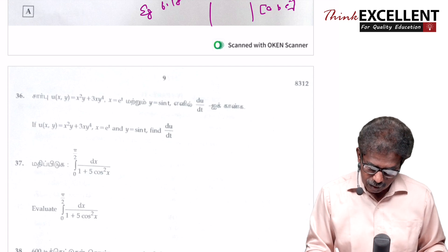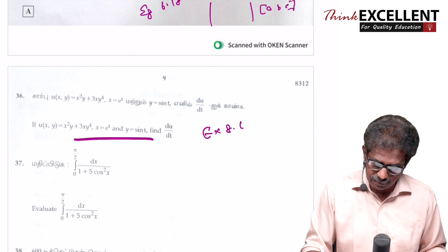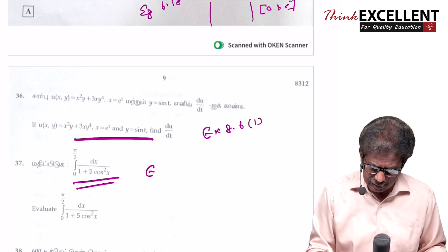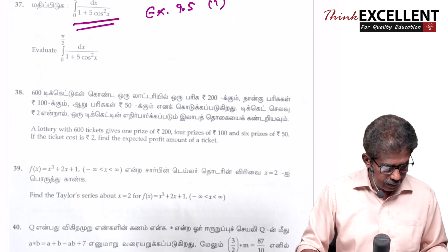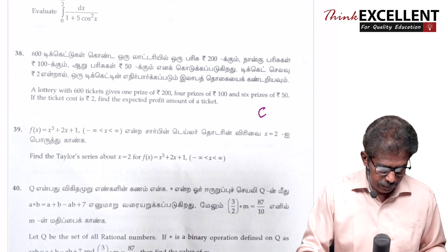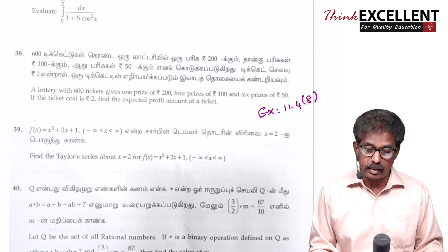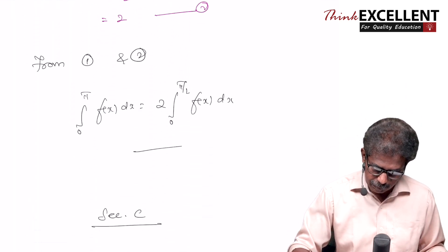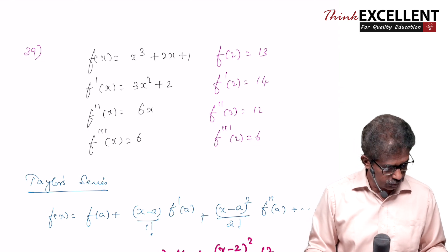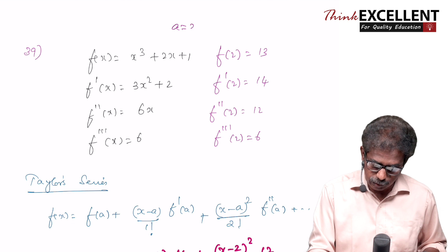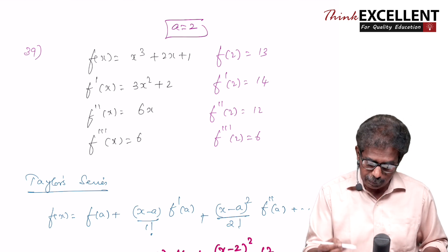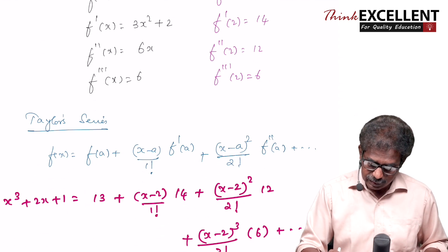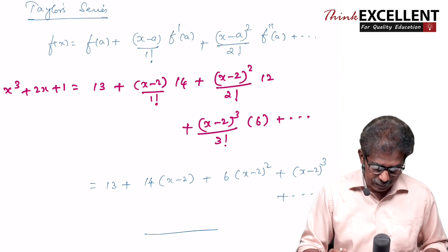Question 37 involves a denominator with sin² or cos² — Exercise 9.5, first question. Question 38 is a book sum from Exercise 11.4, eighth question. Question 39 is a created question using the Taylor series with x = 2. f(x) = x³ + 2x + 1. Keep differentiating to get f′(x), f″(x), and f‴(x), then substitute x = 2 to get f(2), f′(2), f″(2), f‴(2). Substitute into the Taylor series and simplify to get the answer.